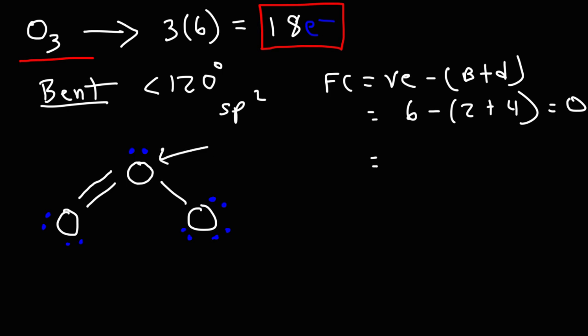Now let's focus on the central oxygen atom. It too has 6 valence electrons, but it has a total of 3 bonds and only 1 lone pair or 2 dots. So we get 6 minus 5, which is 1. The central oxygen atom has a positive formal charge.